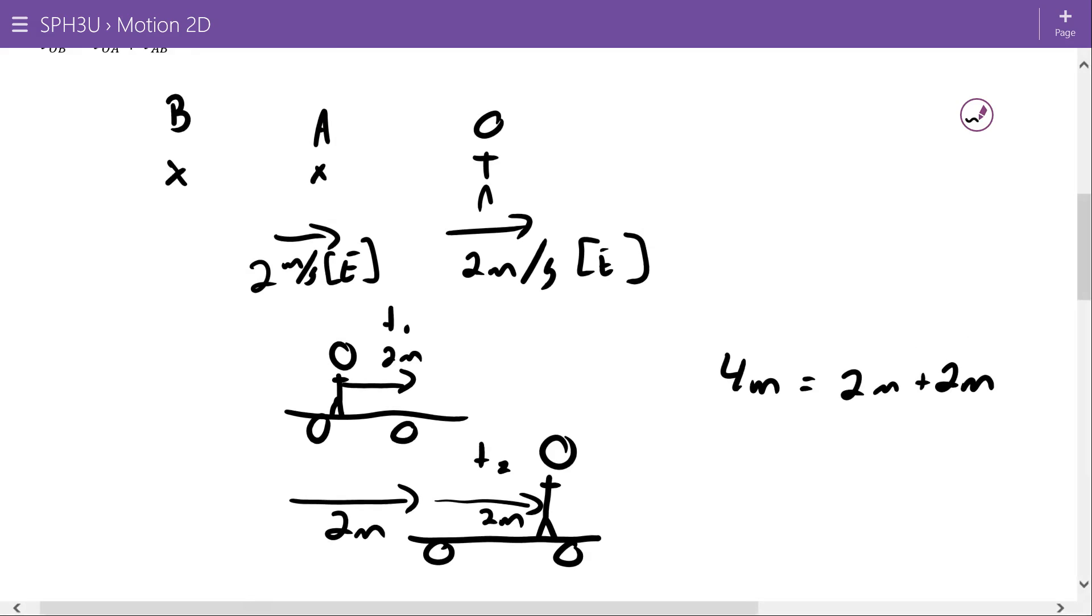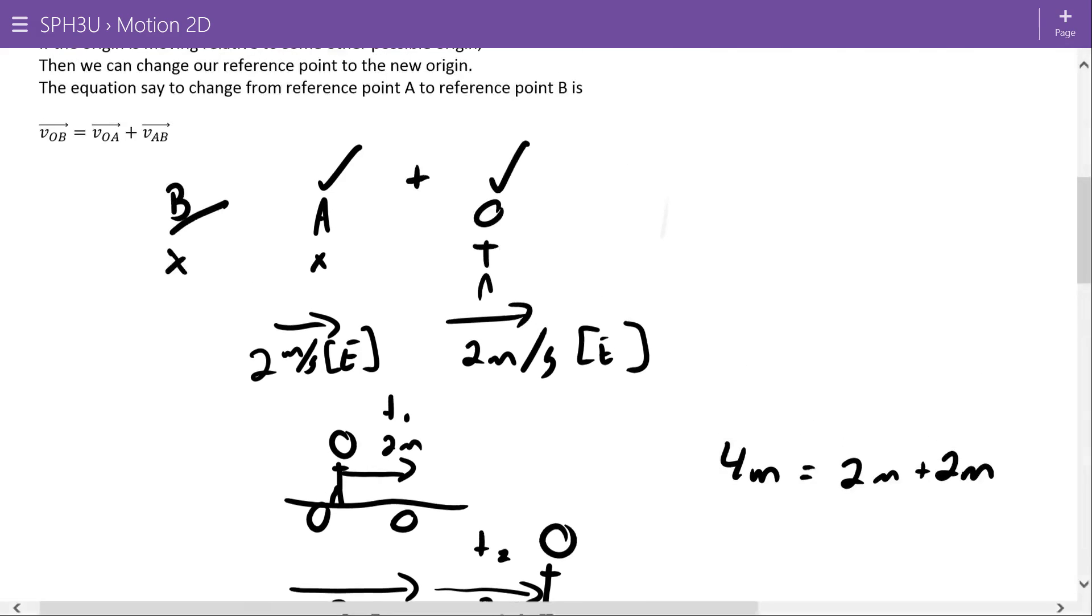Your velocity relative to B is your velocity plus the velocity of the reference point that you're talking about. We can say this in a vector equation. The velocity of the object relative to reference frame B is equal to the velocity of the object relative to the old one A plus how fast A is moving with B.